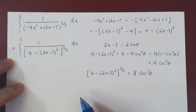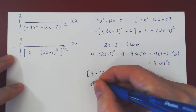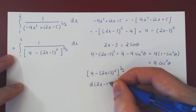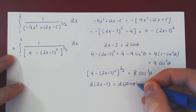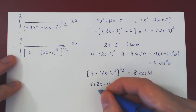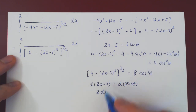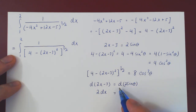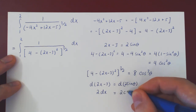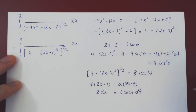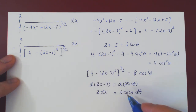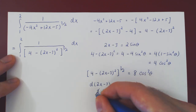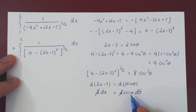Now we need dx. Since 2x − 3 = 2sinθ, both sides have the same differential. The differential of 2x − 3 is 2dx, and the differential of 2sinθ is 2cosθ dθ. Solving for dx: divide both sides by 2, so dx = cosθ dθ.